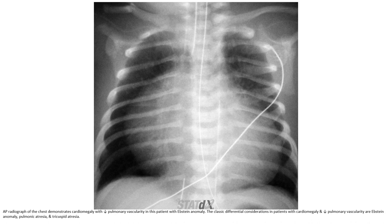PA radiograph of the chest demonstrates cardiomegaly with increased pulmonary vascularity in a patient with Ebstein's anomaly. The classic differential diagnosis in patients with cardiomegaly and increased pulmonary vascularity with Ebstein's anomaly includes pulmonary atresia and tricuspid atresia.